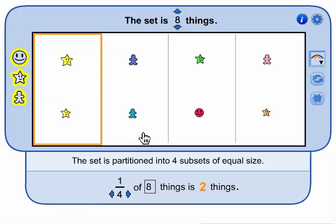The picture shows a set of 8 things equally partitioned into 4, that is 4 subsets of equal size. The highlighted subset shows that 1 4th of 8 things is 2 things.